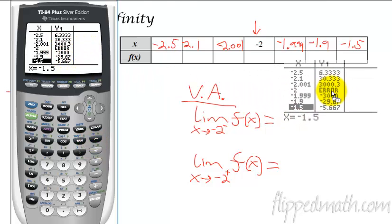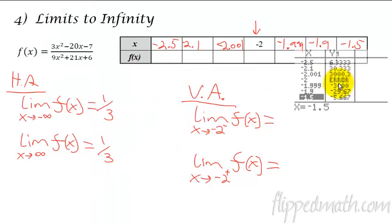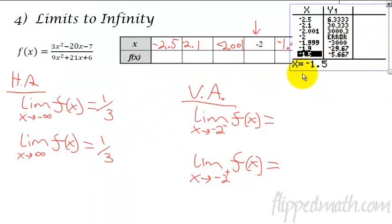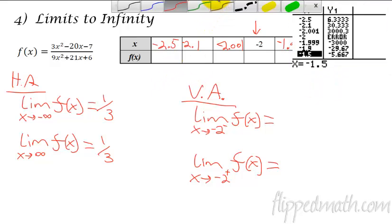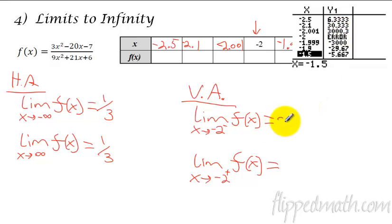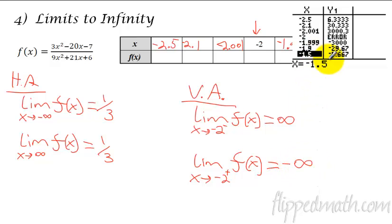There are my answers. You would need to fill that chart out on your test to get credit. As we approach negative 2 on the left side, it's a very large positive number — 3,000. So since it's a large positive number on the left side, the y values are going up: 6, 30, 3,000. On the right side, as we go backwards towards negative 2, we're at negative 5.6, negative 29, negative 3,000 — so it's getting more and more negative, which means it's approaching negative infinity on the right side as we come back towards negative 2.